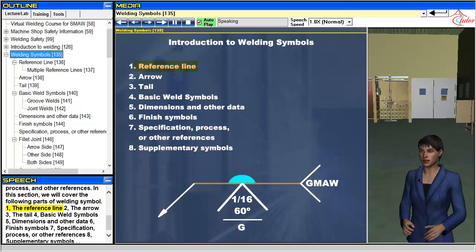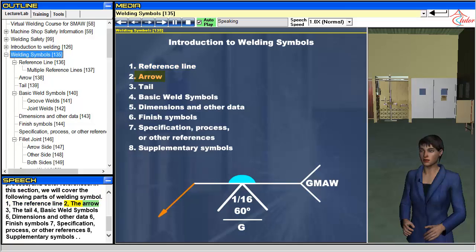1. The reference line. 2. The arrow. 3. The tail. 4. Basic weld symbols. 5. Dimensions and other data. 6. Finish symbols. 7. Specification, process, or other references. 8. Supplementary symbols.